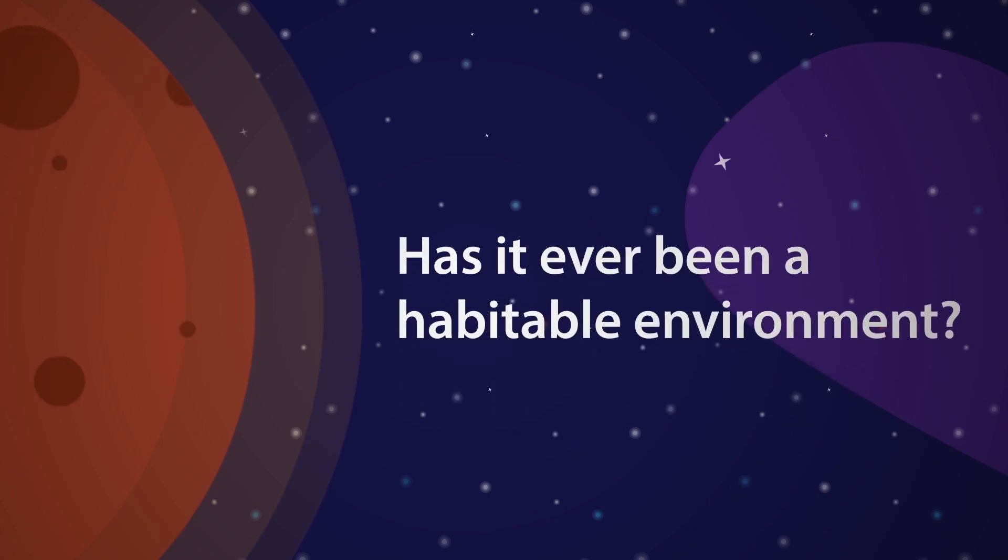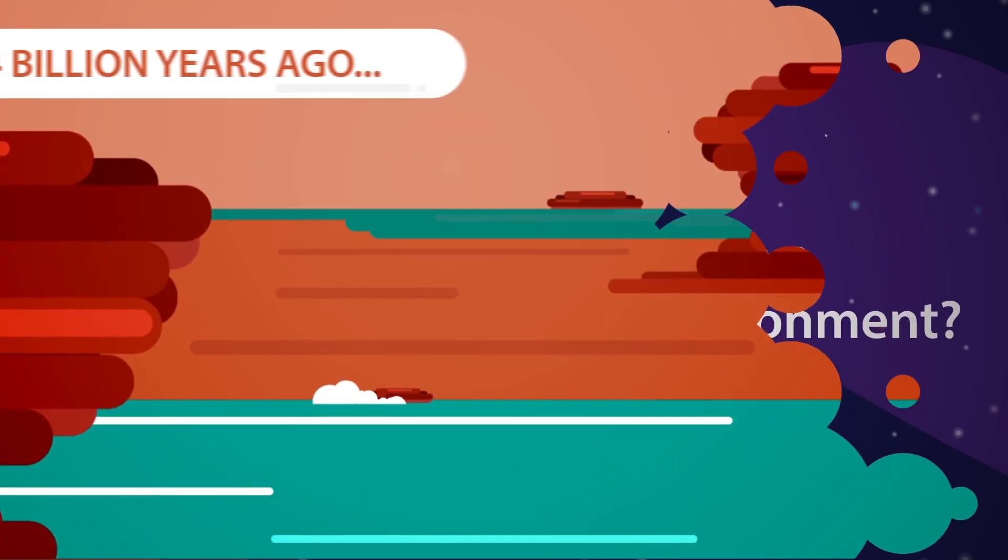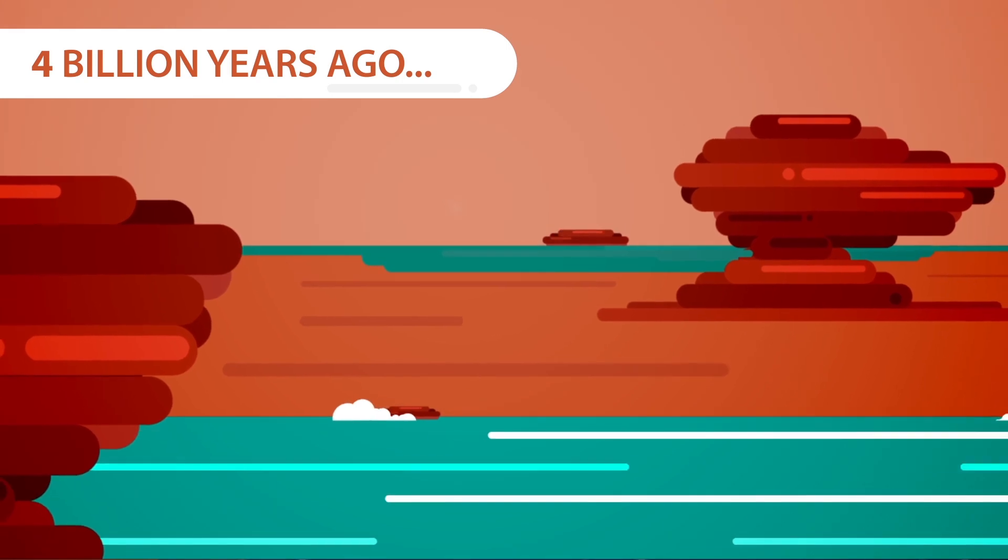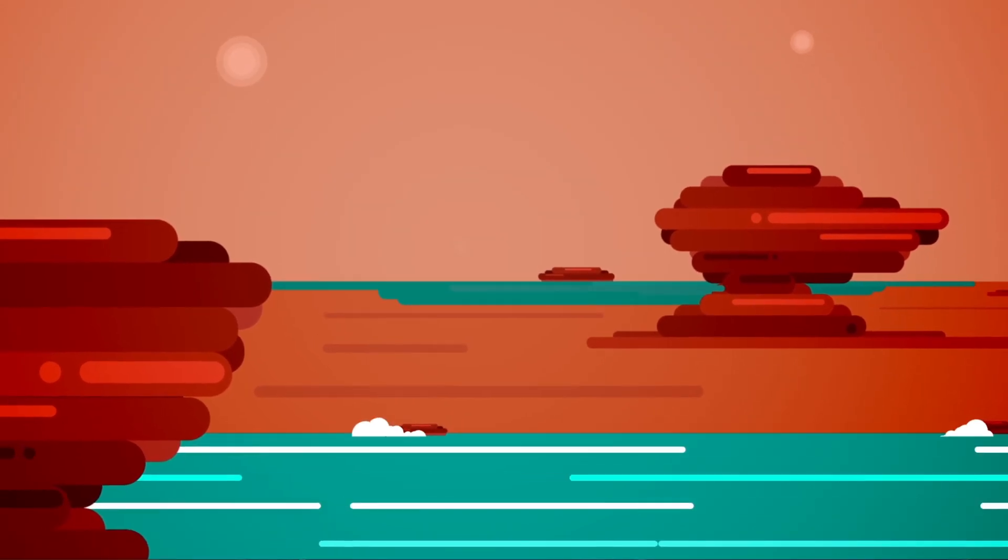Has it ever been a habitable environment? Four billion years ago, when the first known life formed on Earth, Mars was much similar to the conditions on Earth.